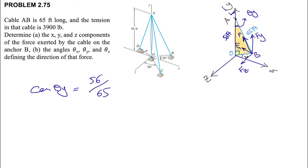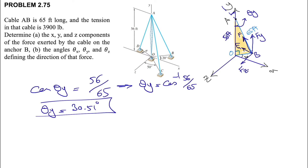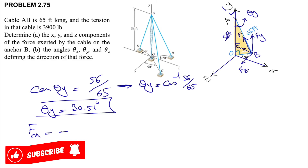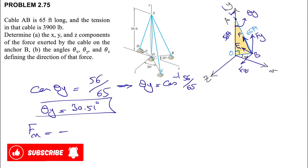For finding Fy, the cosine of theta_y equals 56 divided by 65, which is adjacent over hypotenuse. From here we find theta_y as the inverse cosine of 56/65, giving us theta_y = 30.51 degrees.